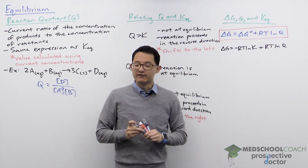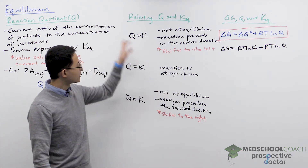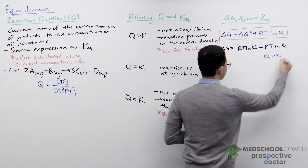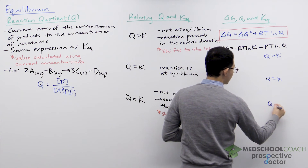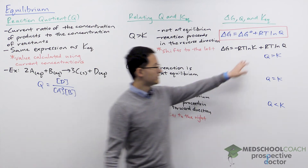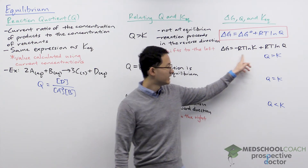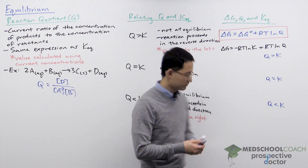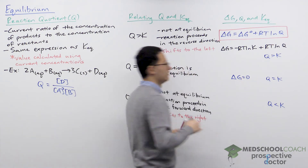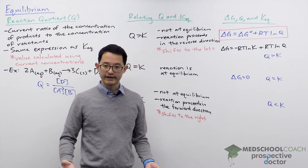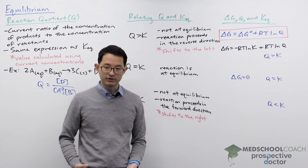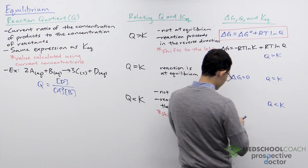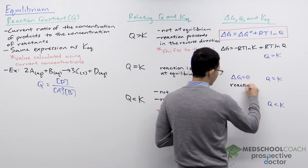With the expression delta G = −RT ln K + RT ln Q, there are three possibilities for Q and K. If Q equals K, the two terms cancel and delta G equals zero. This explains why a reaction with delta G = 0 is at equilibrium — when delta G = 0, Q = K.